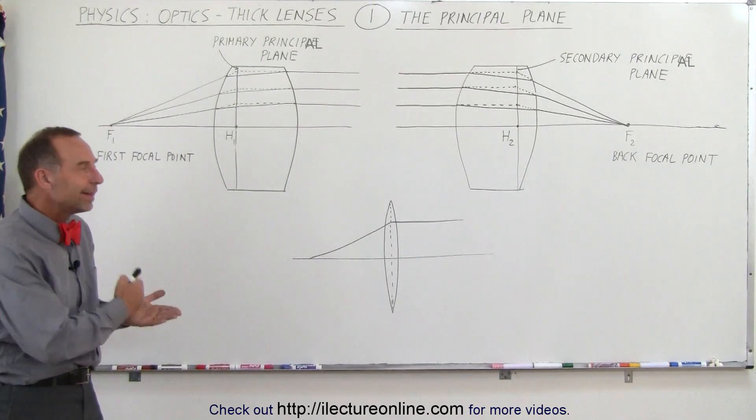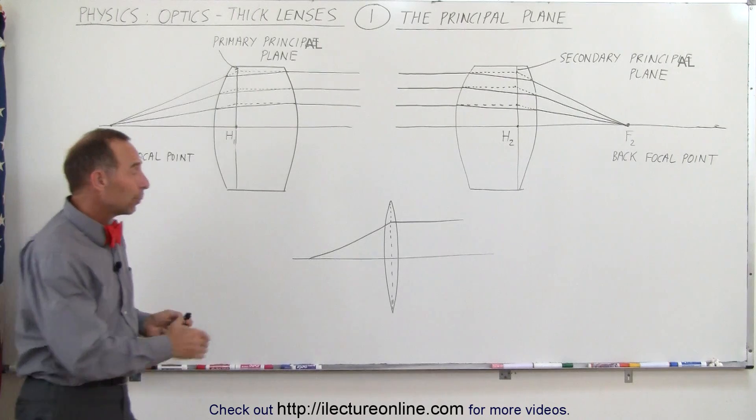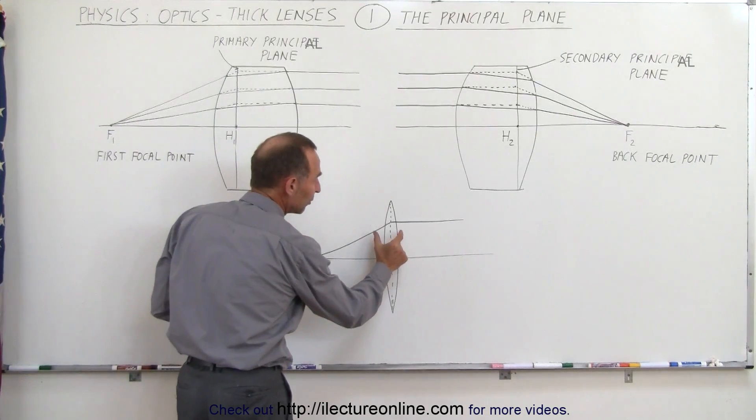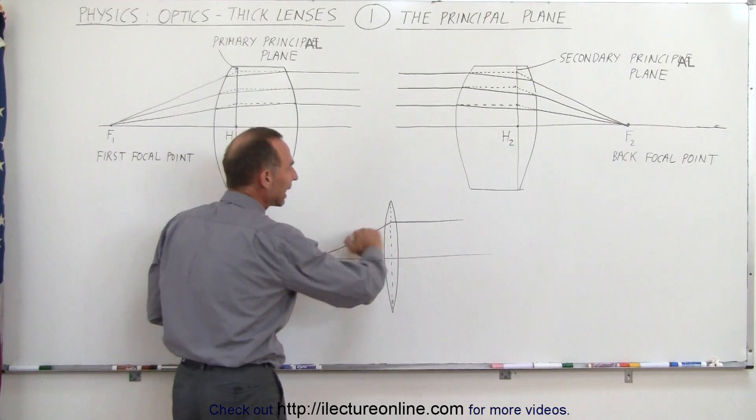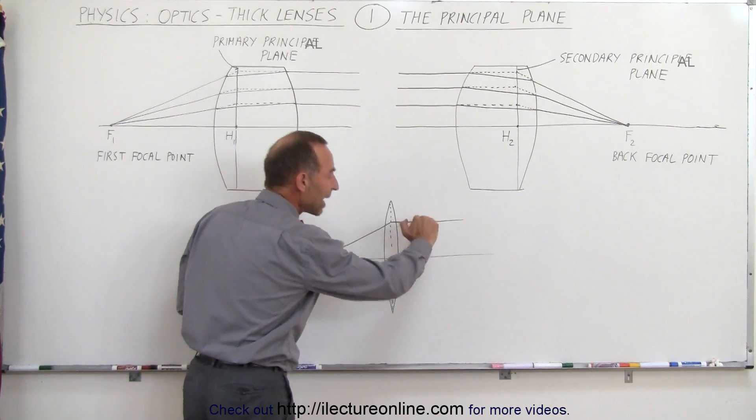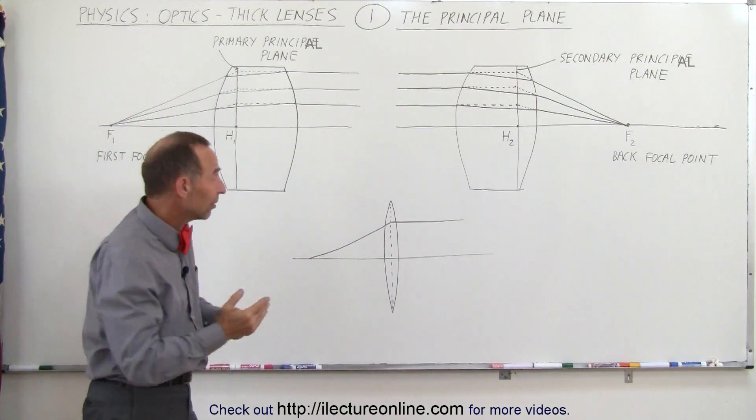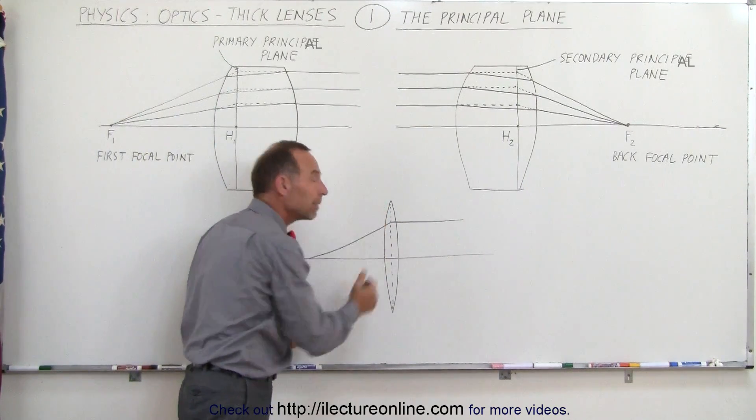The major difference between thin lenses and thick lenses is that with thin lenses we consider them to be so thin that the location where the light refracts as it travels through the lens is a single location down the middle of the lens.